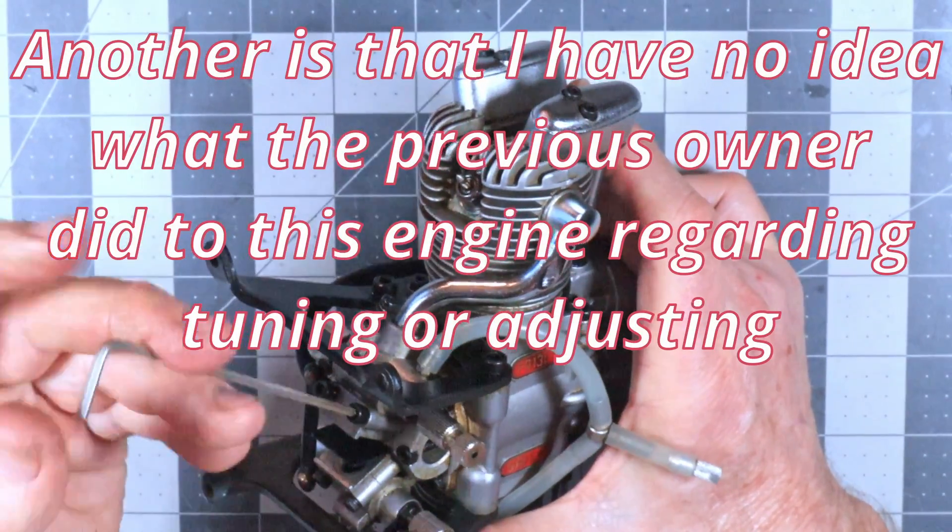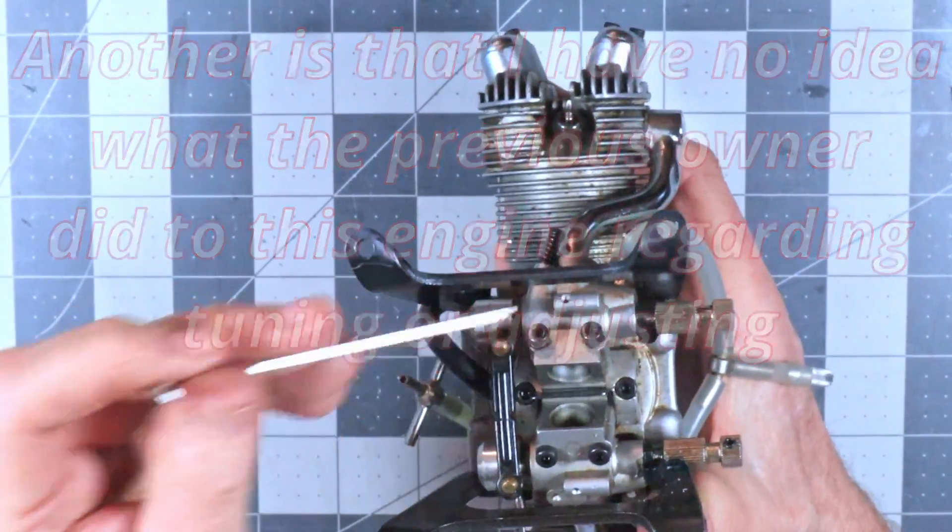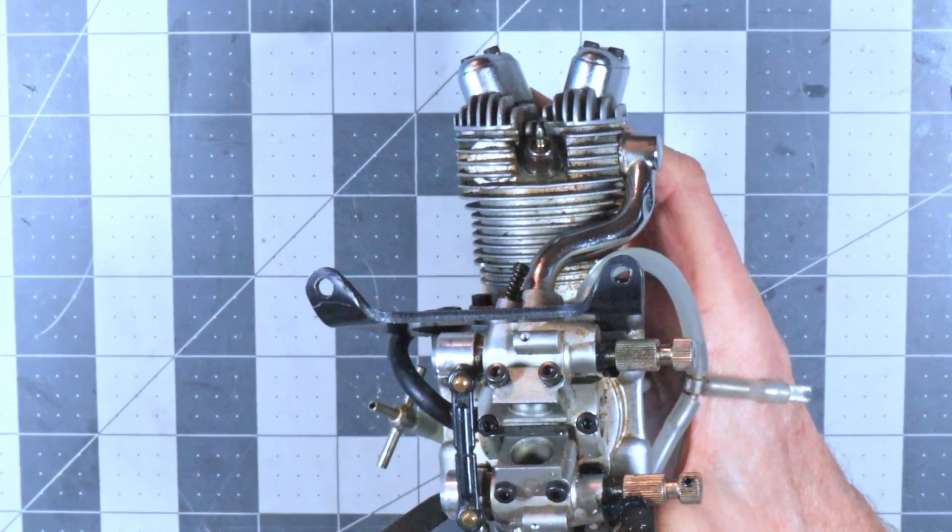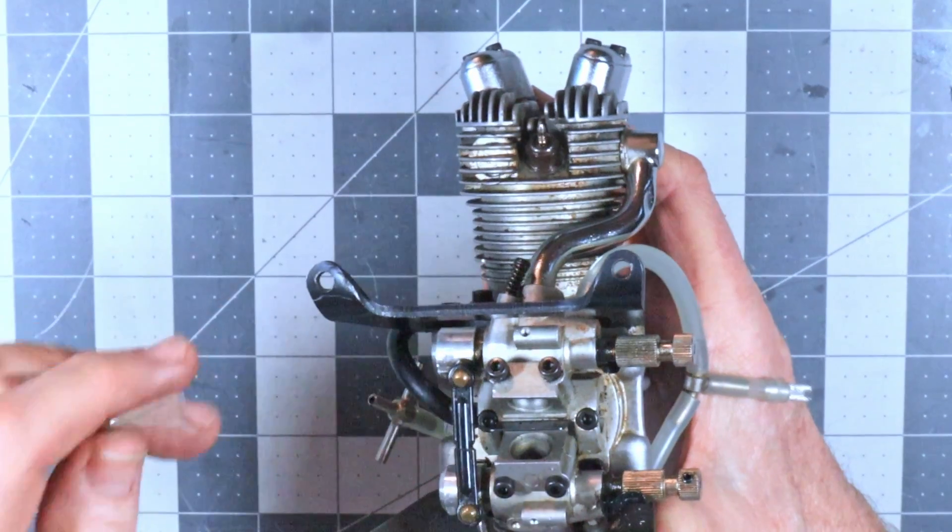But I'm hoping that if I can just pull these four screws out that that will loosen up these carbs and I can at least slide them off the intake tubes, disconnect this little thing here.